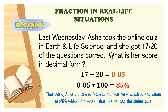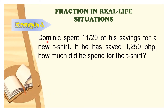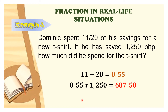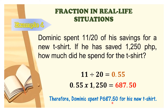Don't forget to write the conclusion after you get the right answer. Example 4: Dominic spent 11/20 of his savings for a new t-shirt. If he has saved 1,250 pesos, how much did he spend for the t-shirt? First, convert the fraction into decimal form: 11 divided by 20 equals 0.55. Then multiply that decimal by the amount saved by Dominic: 0.55 times 1,250 equals 687.50. Therefore, Dominic spent 687 pesos and 50 centavos for his new t-shirt.